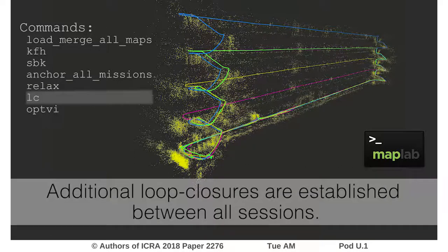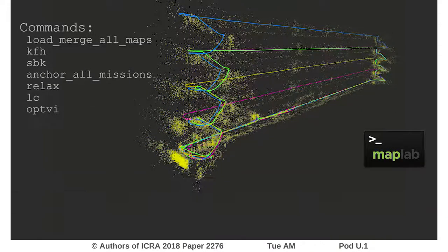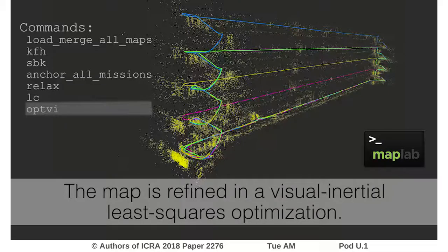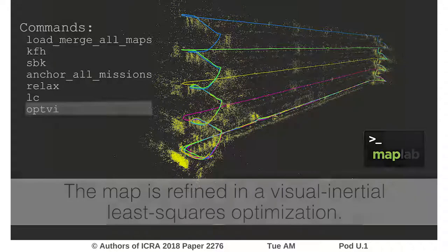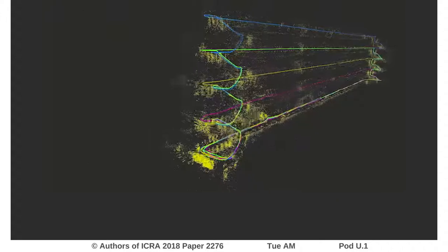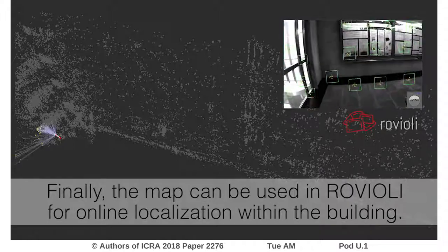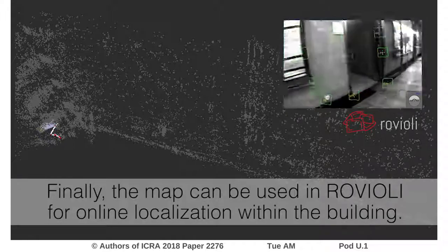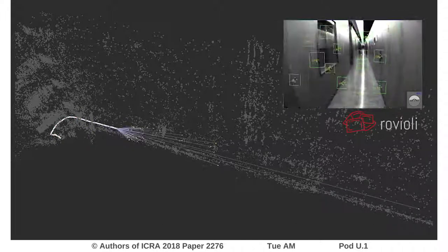Next, we find additional loop closures between all sessions. Finally, the entire map is refined using weighted least squares optimization. The map can then be reused to relocalize when visiting the building again. The rays show correspondences between the current image and the localization map.